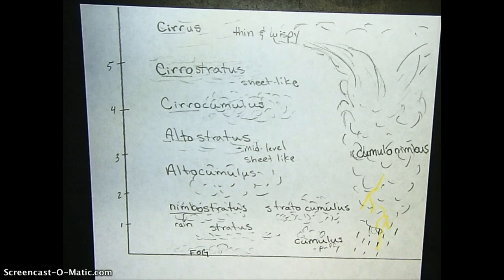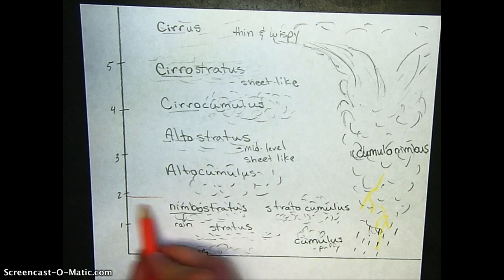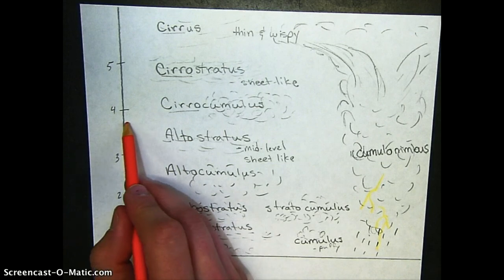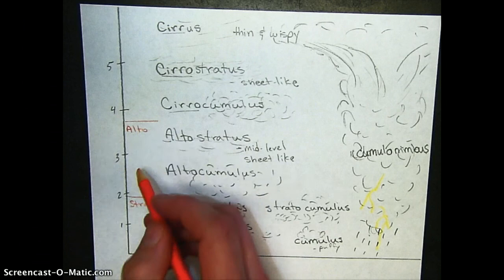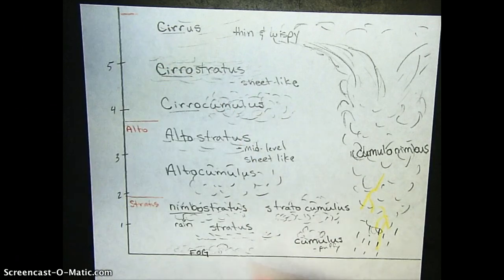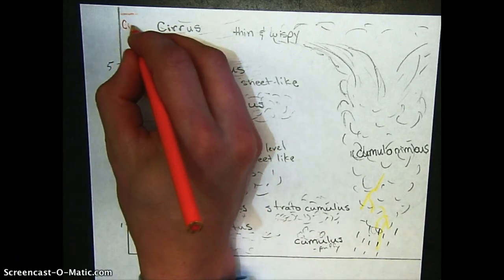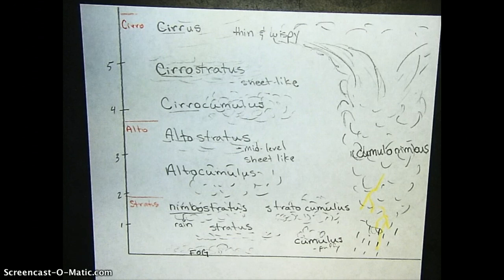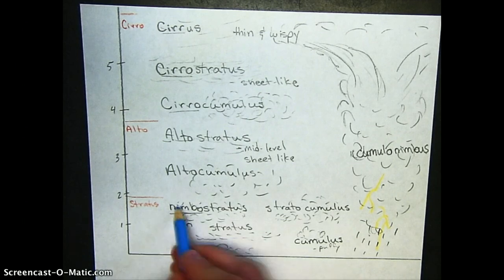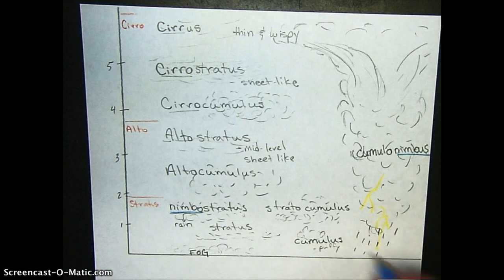All right, so we're going to separate this a little bit. Stratus clouds are low level, and high elevation are cirro. And of course if it's puffy then it has the cumulo or cumulus name attached, and if it rains it has nimbo, nimbo, rain.